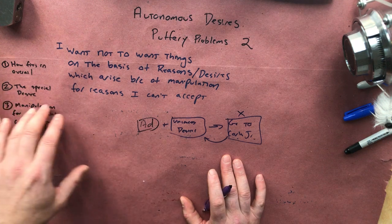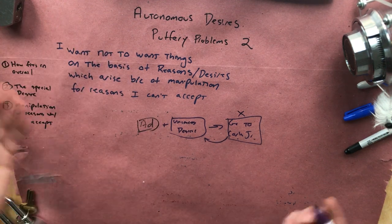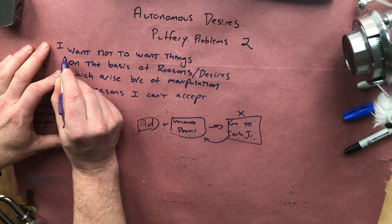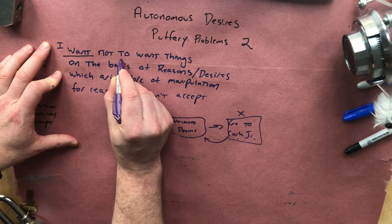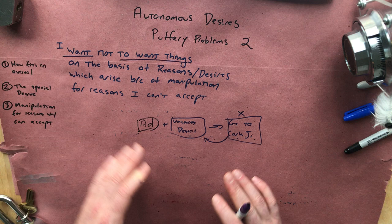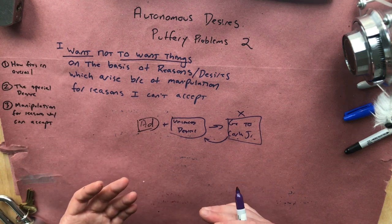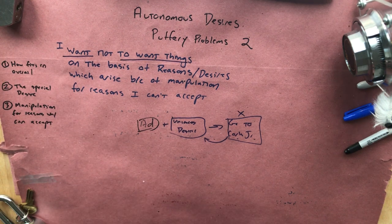A couple of things about this desire. First, obviously, it is a second order desire. It's a desire about another desire. It's a desire about which desires you have. So again, that's very important to autonomy.